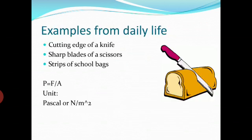I will give you some more examples from daily life to make pressure clearer. You notice that the cutting edge of a knife is very sharp — this question can come in your exam. Someone may ask why the cutting edge of a knife is made very thin. Very thin means the area is less, so when the area is less, you get more pressure, and you can easily cut any fruit or object. In the same way, the sharp blades of a scissor — sharp means less area, and when area is less, pressure is more, so the scissor can cut anything easily.